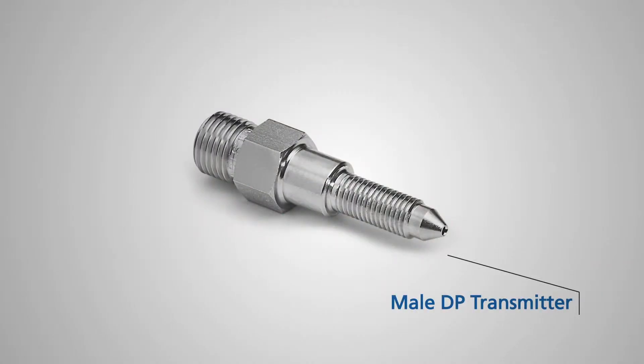The tip of this adapter is precision ground to make a pressure tight metal to metal seal with the bleeder port in the DP vent plug. The other side is male Ralston quick test.